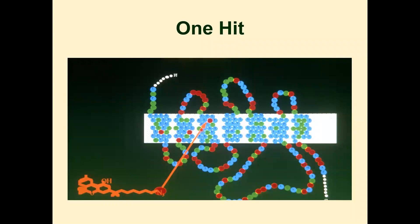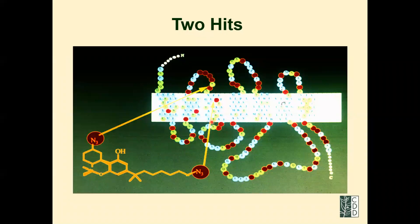We can also put two azido groups — one here and one there — giving three-dimensional structural information. Together with other physical measurements, we can identify where the ligand is. Alternatively, we use an electrophile: an isothiocyanate group (NCS). That NCS group likes to react with nucleophiles, specifically cysteines in the receptor. Our job then is to find which cysteine interacted with the NCS group.